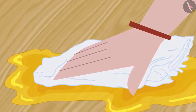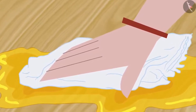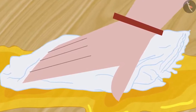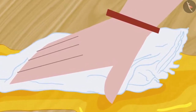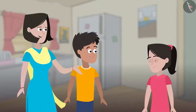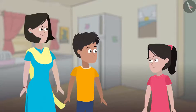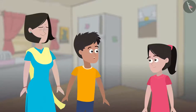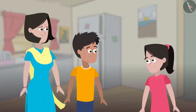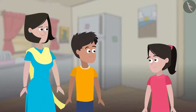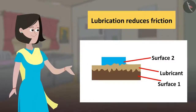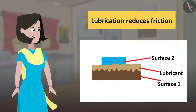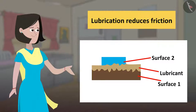There is some oil spilled on the kitchen floor. Mummy is cleaning it when Sania and Kabir come into the kitchen. Be careful, kids. You will slip and fall. Ideally, friction should prevent us from falling, shouldn't it? Yes, ideally it should. But there are certain factors that reduce friction. Like in this case, the floor is lubricated with the spilled oil. Lubrication reduces friction, which means that you may slip on this oil because of reduced friction.